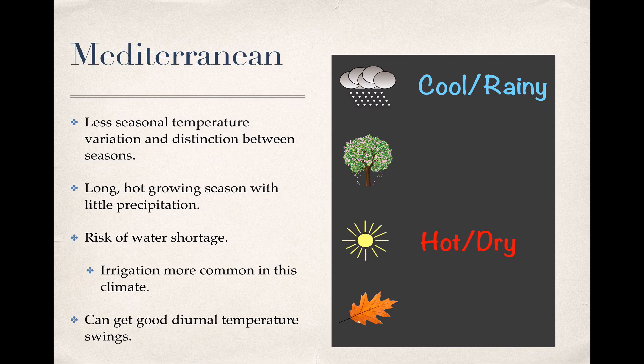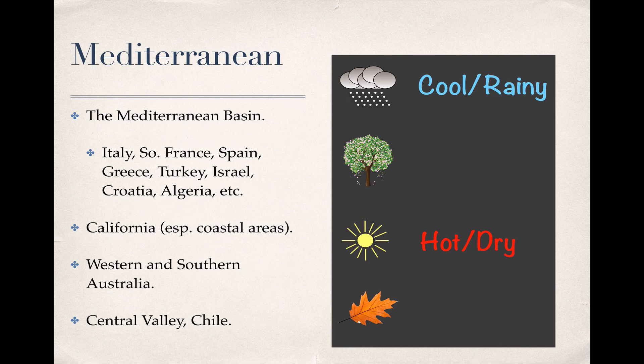Regions with Mediterranean climates are always near large bodies of water, which help moderate temperatures year-round. But thanks to the dry and clear weather of the hot, dry summers, these areas can get very cool at night, resulting in good diurnal temperature swings. At the risk of stating the obvious, you'll find this climate in the Mediterranean basin, including most of Italy, southern France, Spain, Greece, Turkey, Israel, Croatia, and Algeria, to name but a few wine producers in the region. California is also home to this climate, especially in its coastal regions that include the best-known wine-producing areas in the state. You'll also find it in western and southern Australia, as well as in Chile's Central Valley.